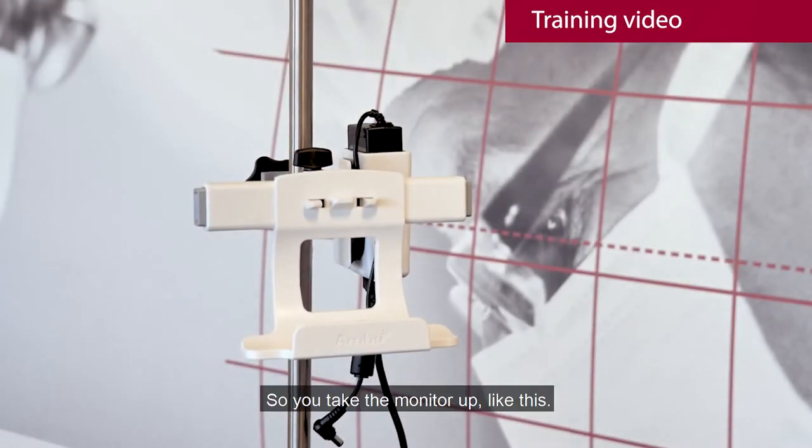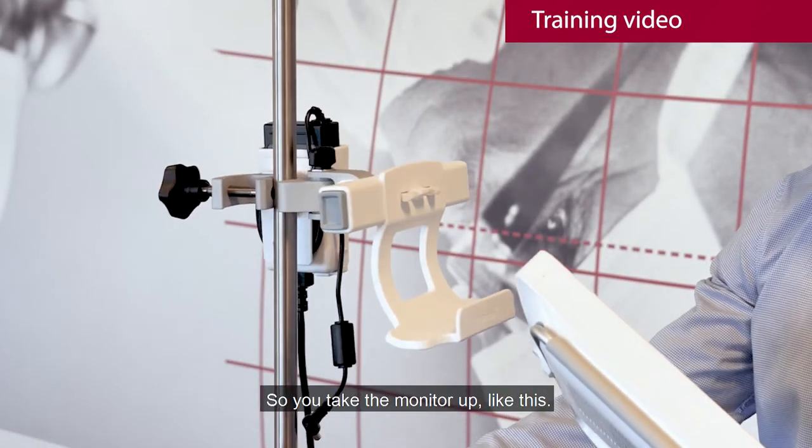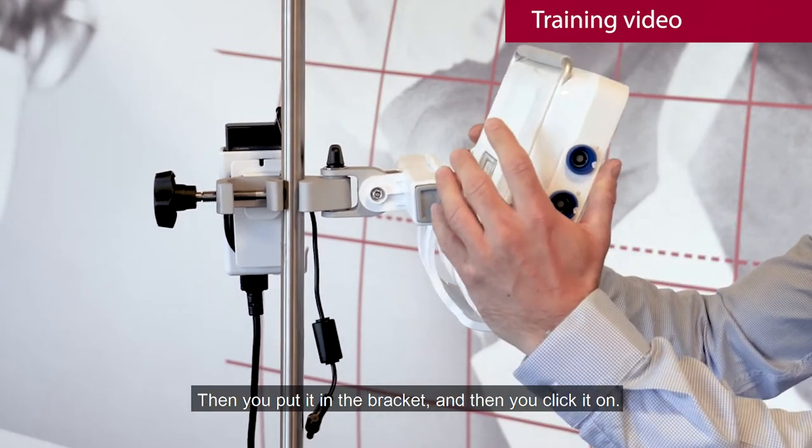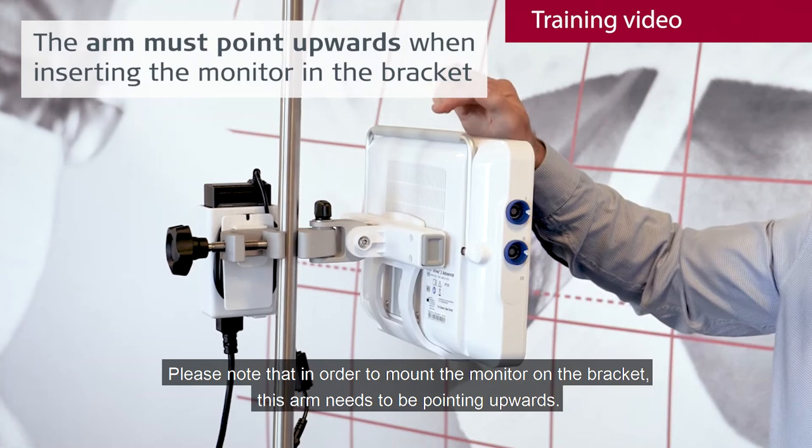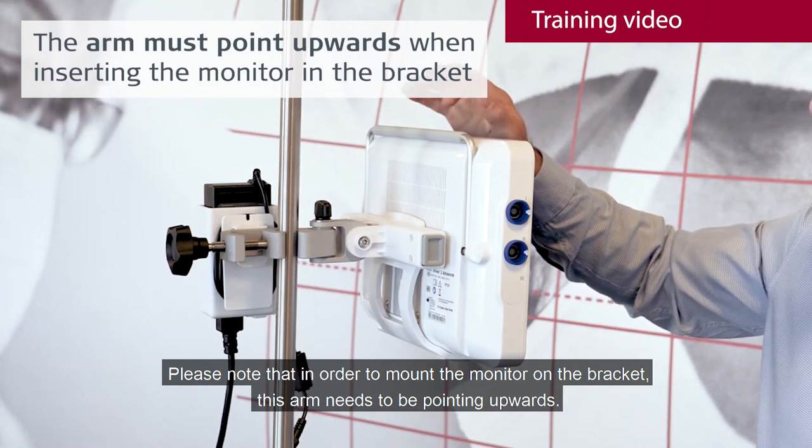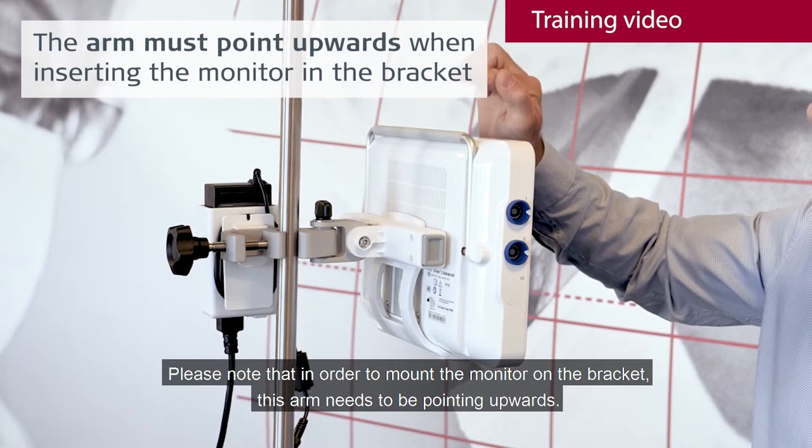So you take the monitor up like this, then you put it in the bracket and then you click it on. Please note that in order to mount the monitor on the bracket, this arm needs to be pointing upwards.